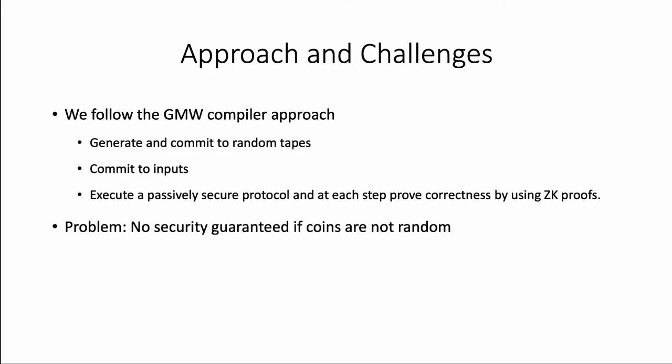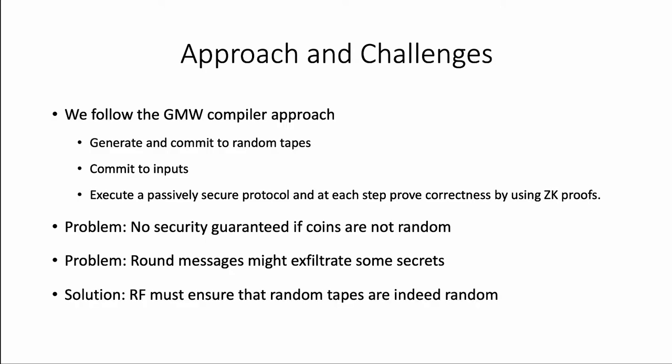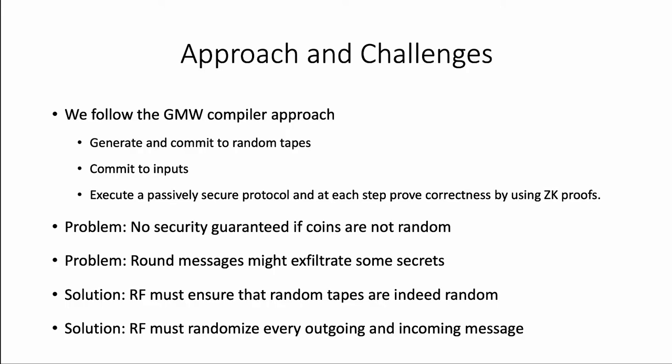But we cannot assume this. In our case, the honest parties' implementations are tampered, and so even the honest parties pick biased coins. The second problem is that the round messages themselves might leak some secrets. Our approach here is to make the RF ensure that the random tapes are indeed random, and the RF must also randomize and maul every outgoing and incoming message. The challenge is to design the underlying MPC protocol for which we can build such RFs that change transcript messages without breaking correctness.